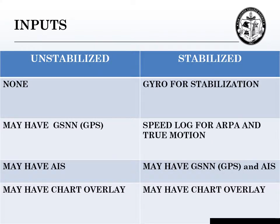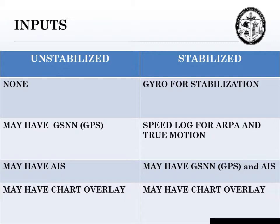The inputs for these five radars. For the unstabilized head-up relative motion radar, there are no inputs. You may have a global satellite navigation system, you may have AIS, and you may have a chart overlay. For the four stabilized radars, they will have a gyro to stabilize the display. For ARPA and true motion, they will need a speed log, like a dual-axis Janus array system. They may also have a global satellite navigation system, AIS, and a chart overlay.